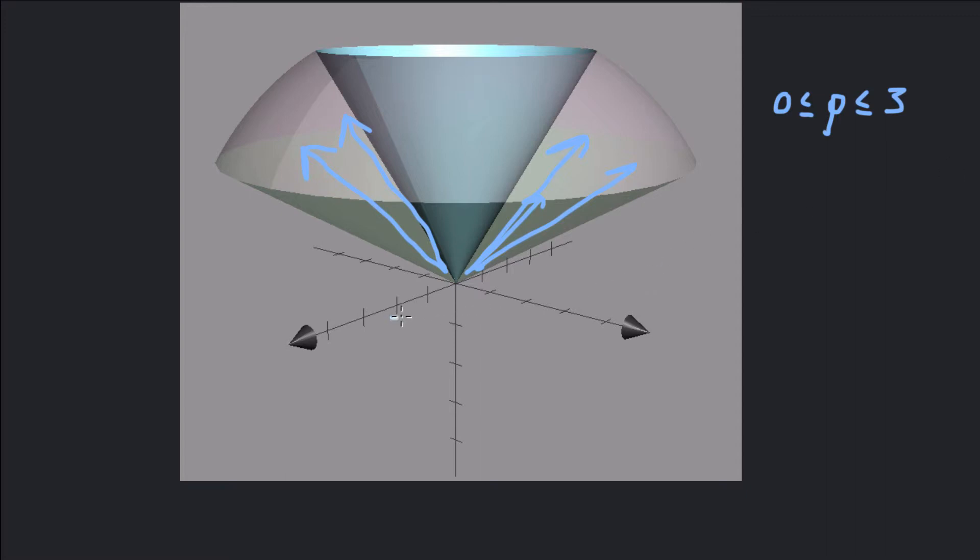θ is going to go all the way around the z-axis, from 0 to 2π. That's an easy target usually. And then φ is going to go from π/6 to π/3. So those are our bounds.